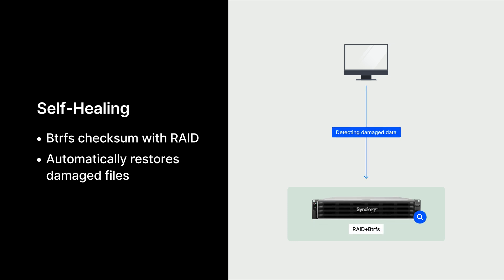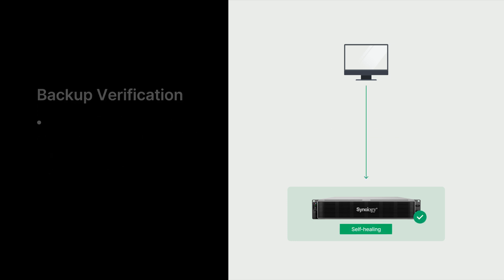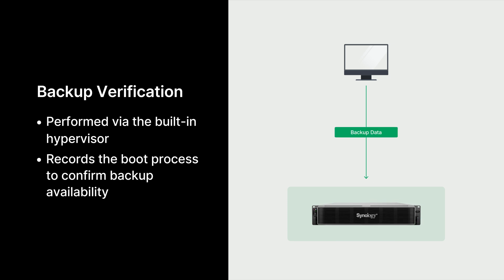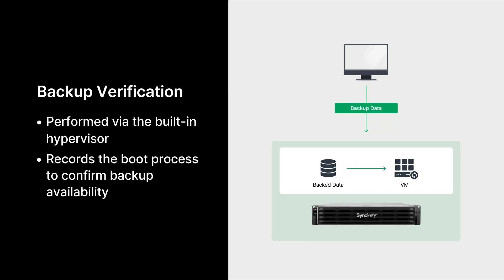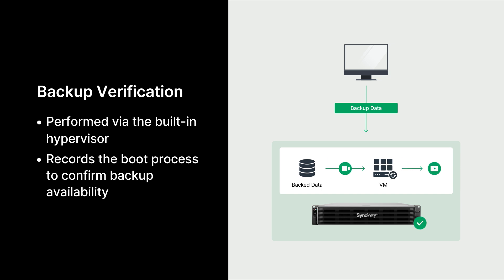It uses the BTRFS file system to detect corruption and RAID for automatic self-healing, keeping your backup safe and ready to restore. Next, Active Protect performs automated backup verification. After each backup, it boots the VM in an isolated environment and records the process, providing video proof that your system can be fully restored.